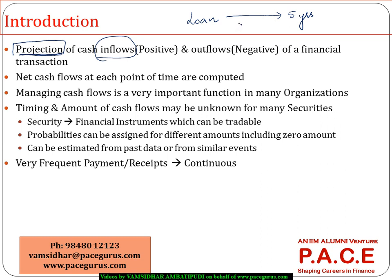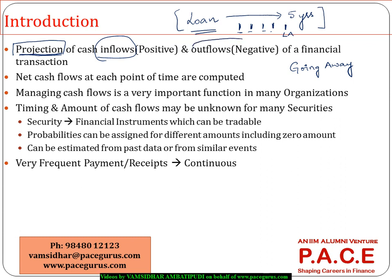As per that loan agreement, every year, at the end of the year, that borrower has to pay some interest. And at the end of five years, along with the interest, he has to give back my loan amount. In this financial transaction, there are some places where money is going away from my pocket. When I have given a loan, money has gone away from my pocket. When money is going away from our pockets, we call it an outflow, or in the language of cash flows, we say there is a negative cash flow.